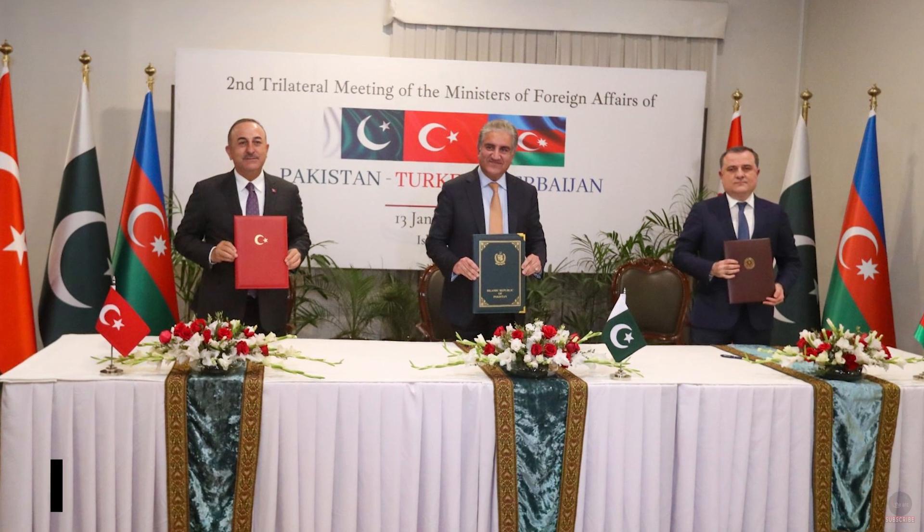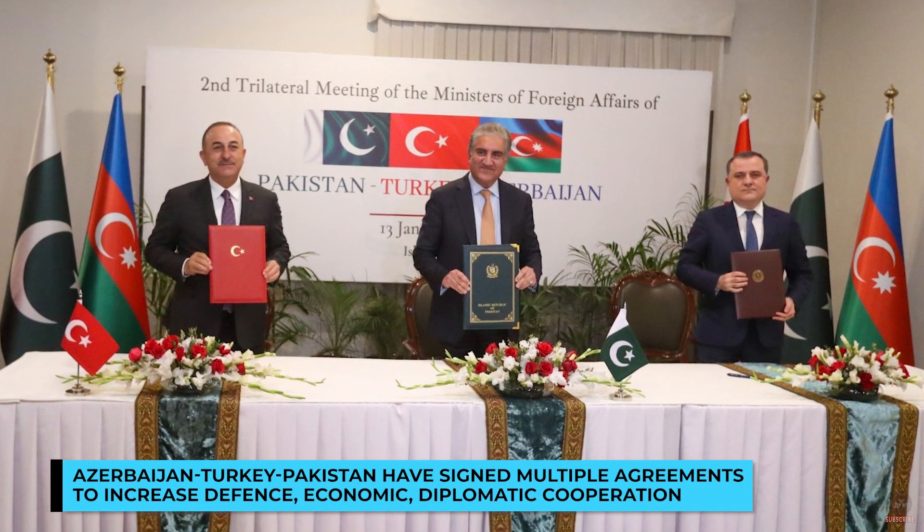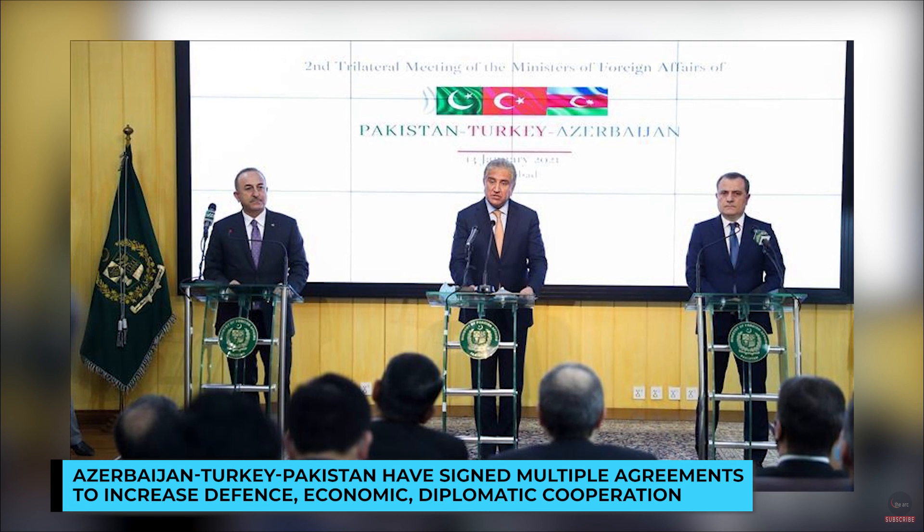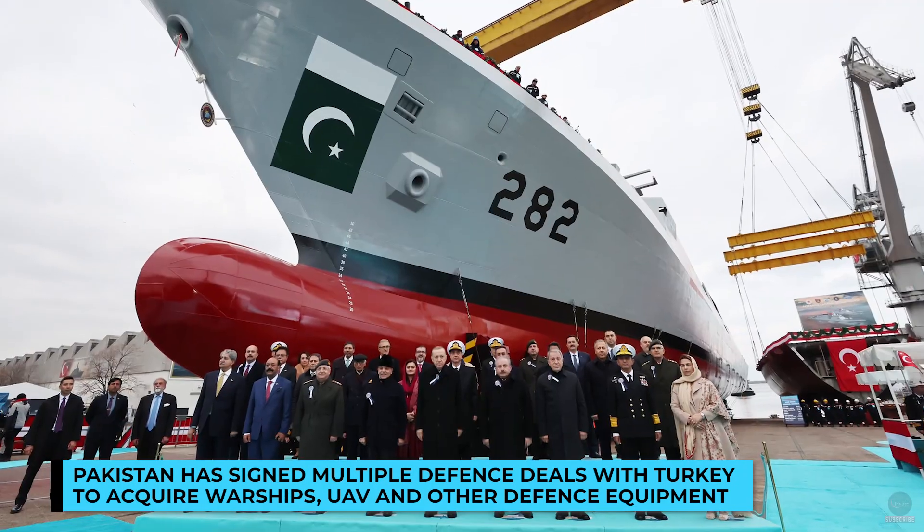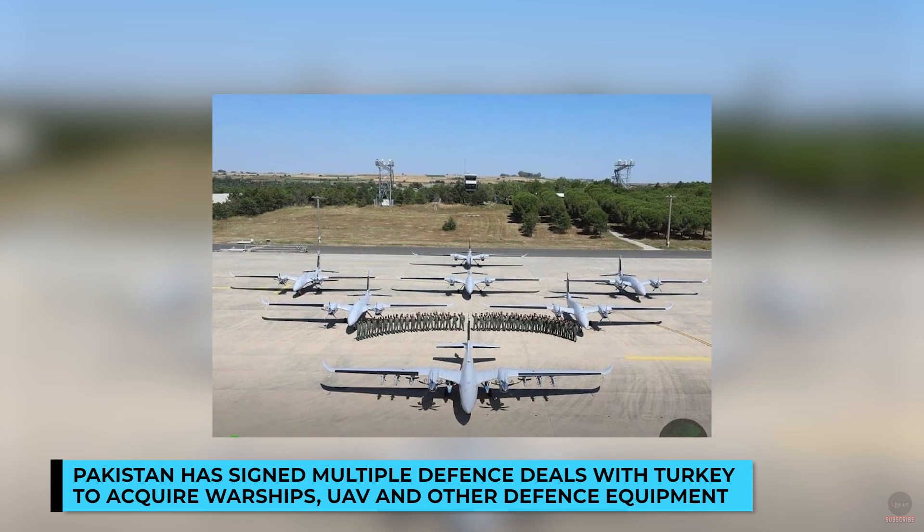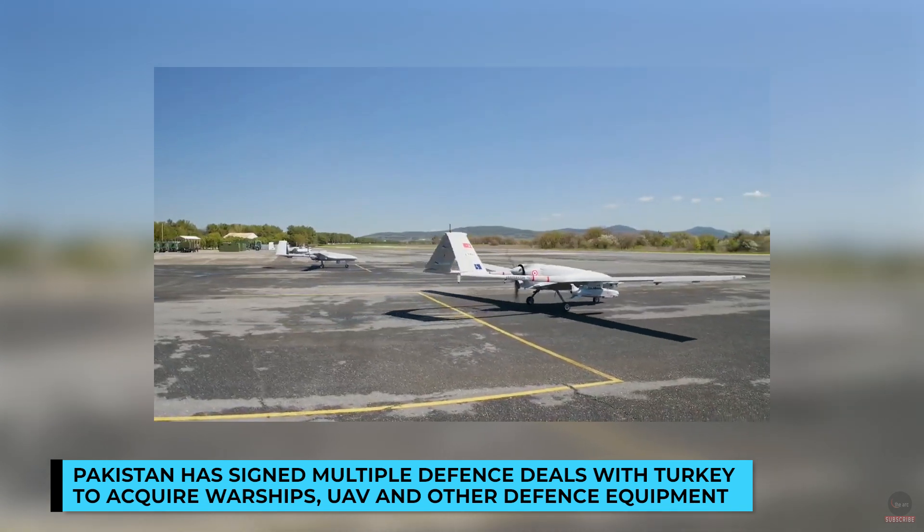The three countries have surprisingly shown some bonhomie towards each other in recent times, signing agreements to deepen security, economic and diplomatic cooperation. The bilateral relation between Azerbaijan and Turkey and Pakistan and Turkey is not new, but this trilateral axis is a recent phenomenon. After the dissolution of the Soviet Union, Turkey and Pakistan were the first countries to recognize Azerbaijan as an independent nation. Incidentally, Pakistan is the only country in the world that does not recognize Armenia's independence. Turkey is now Pakistan's top three arms-supplying countries. Pakistan has purchased warships, drones and other defence equipment from Turkey, and defence cooperation between the two countries has been growing over the years.